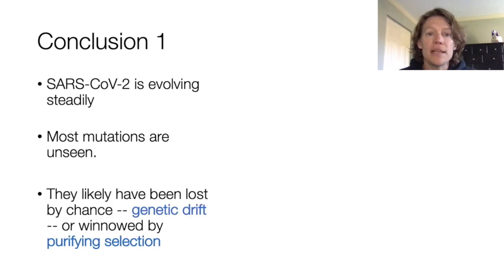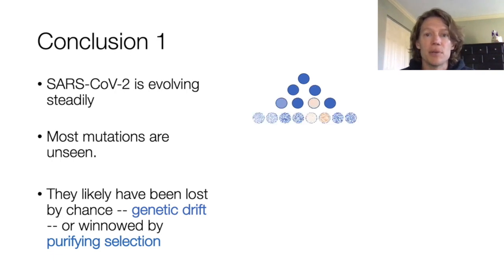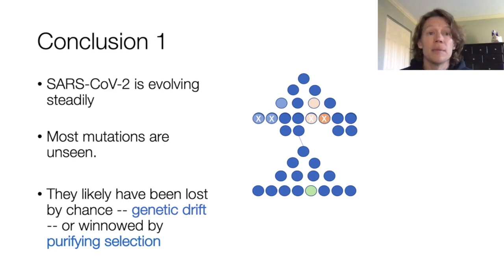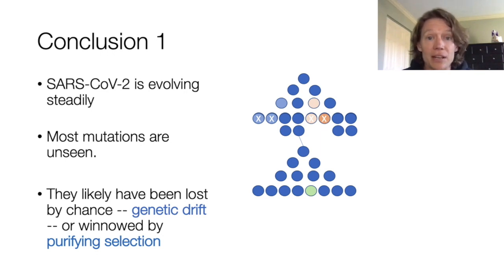In this animation, I show doubling of the virus. In the second division, some mutations happen, but they're ultimately less fit than the dark blue ancestor and are eliminated. The original dark blue ancestor is the one that goes on to cause a new infection, and the process repeats.